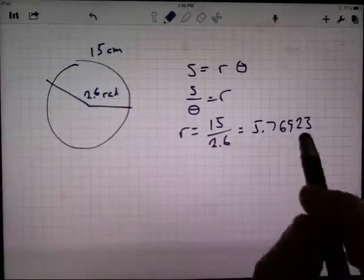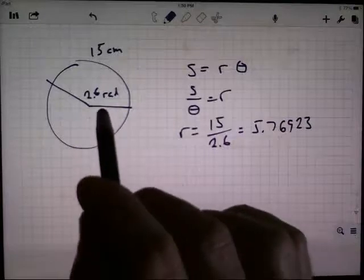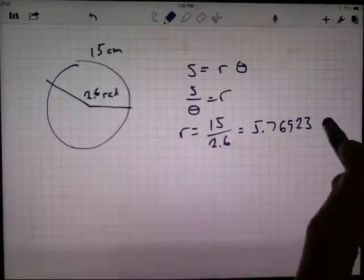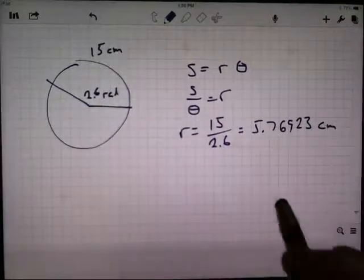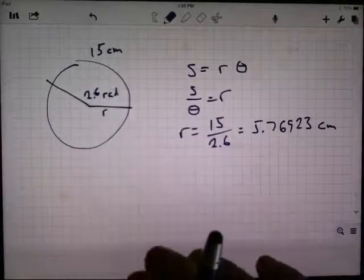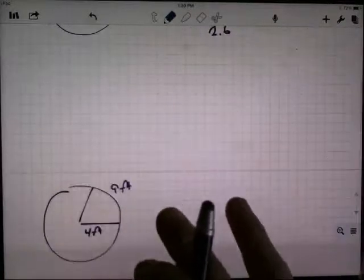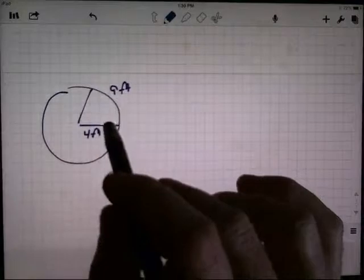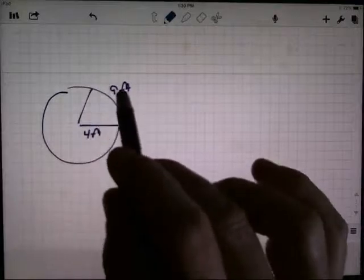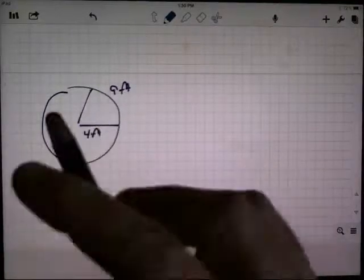And let's see, just to be careful here, the radius, that was measured in centimeters, so this is also in centimeters. Next, I have the radius and the arc, but I'm looking for the angle.